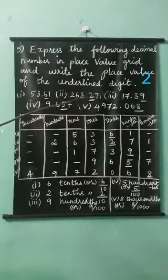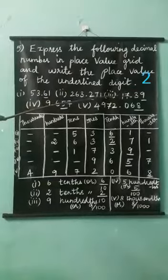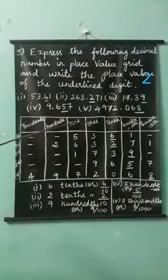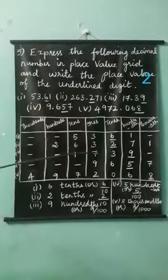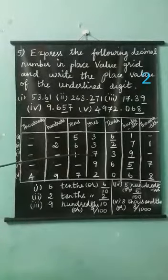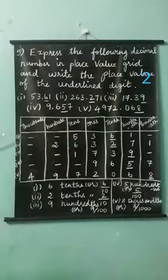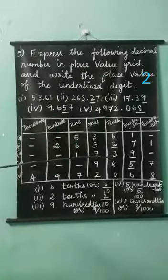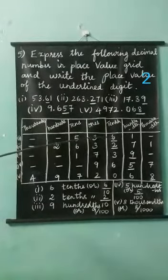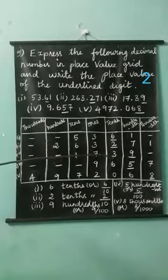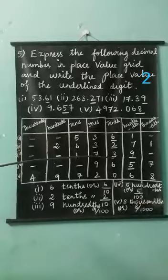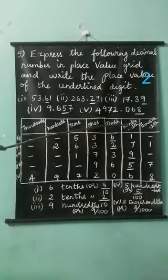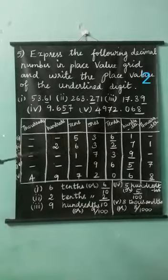See the third number: 17.39. Here, seven is one's place, one is tens place. Then, after the decimal point, three is tenth place, nine is hundredth place. Understood?